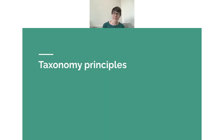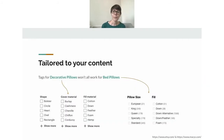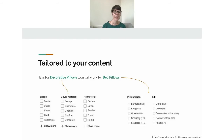Now let's talk about principles for creating taxonomies. The first is that a taxonomy must be tailored to your content. Take pillows — at first glance you might think a pillow is a pillow and use the same tags for all. But there are two main kinds: pillows for a comfortable night's sleep, and decorative pillows. Decorative pillow tags include shape and cover material, since aesthetic value matters. Fill material is also important for both types because of allergies and comfort preferences.